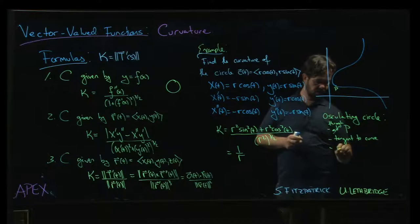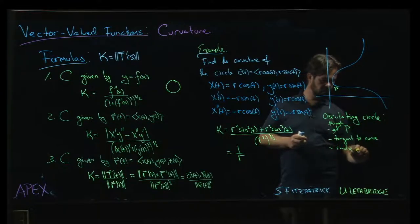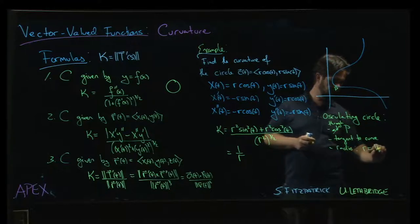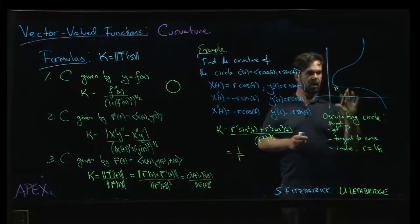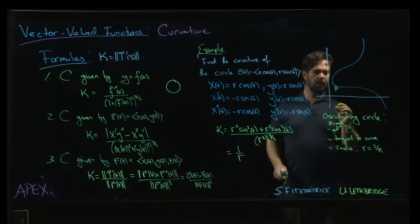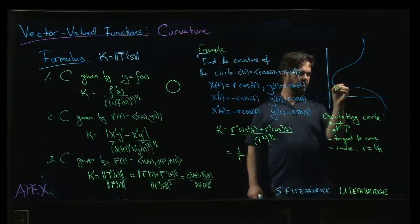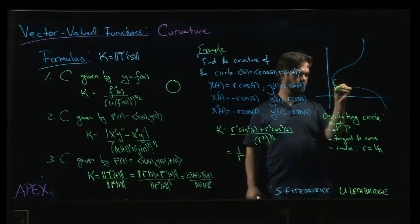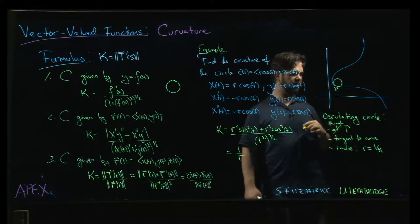And the radius will be given by 1 over the curvature of that curve at that point. So what you get is this circle that just fits in there.